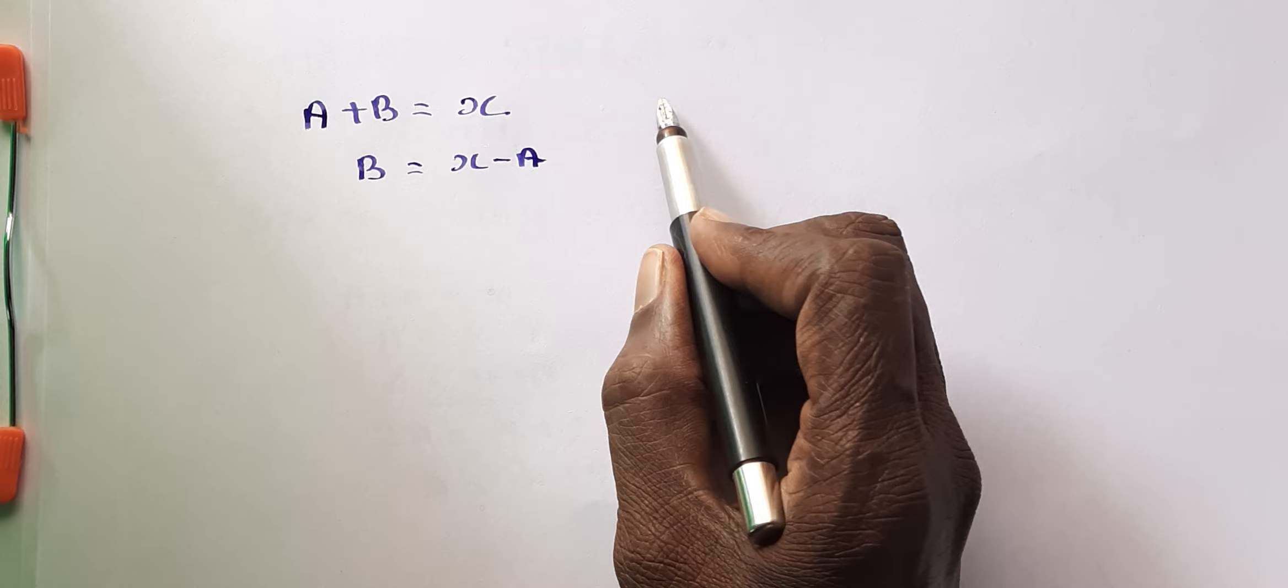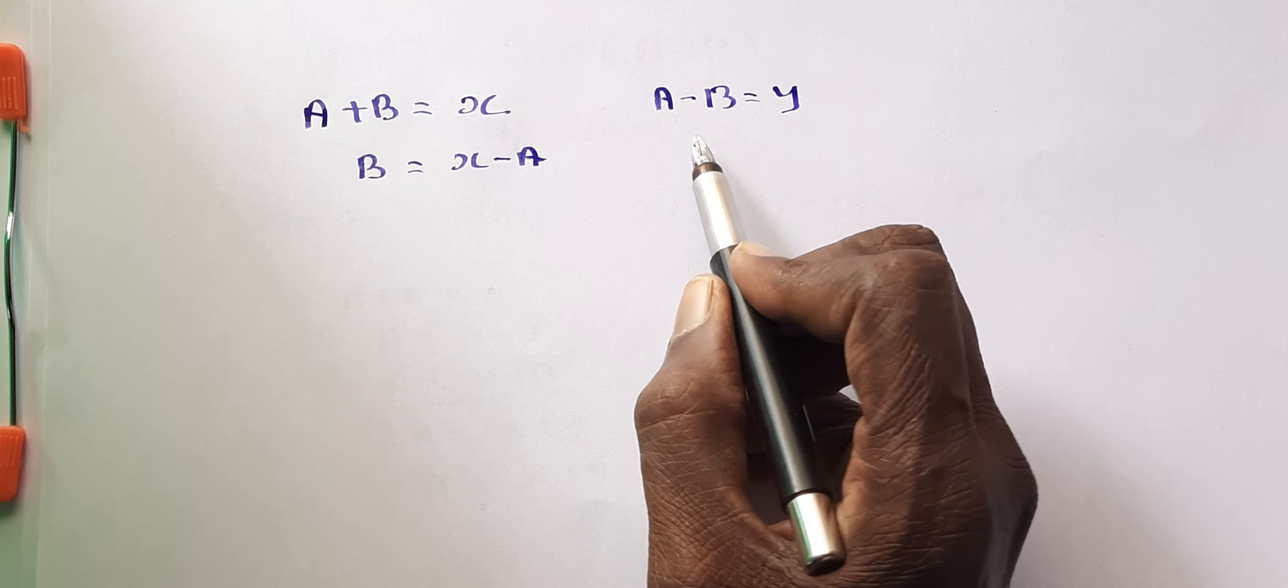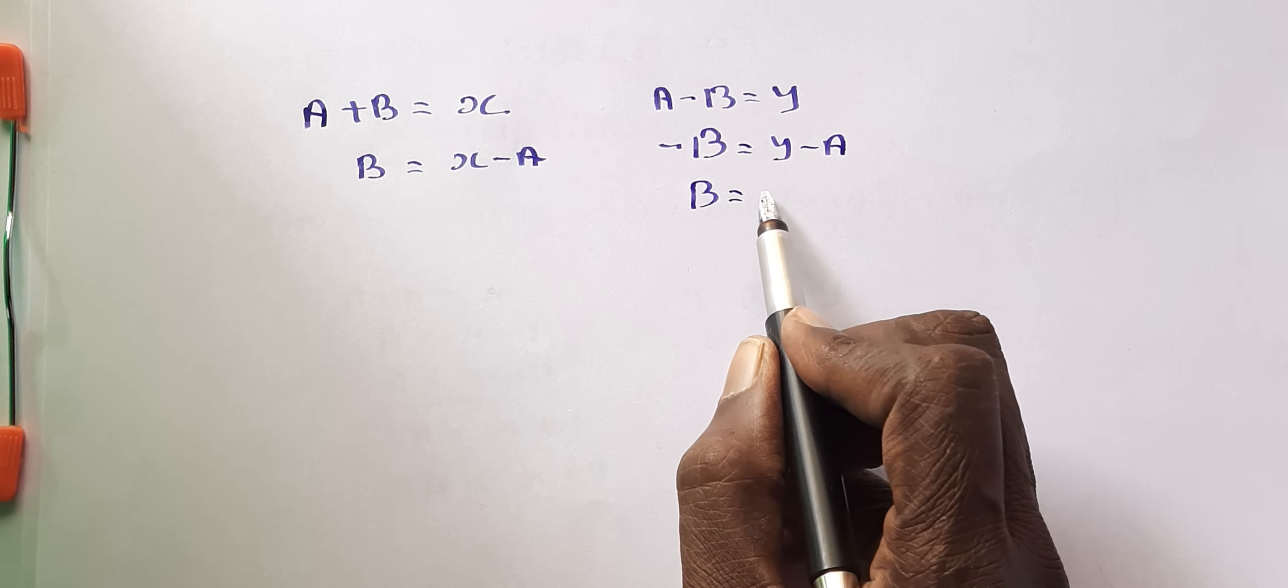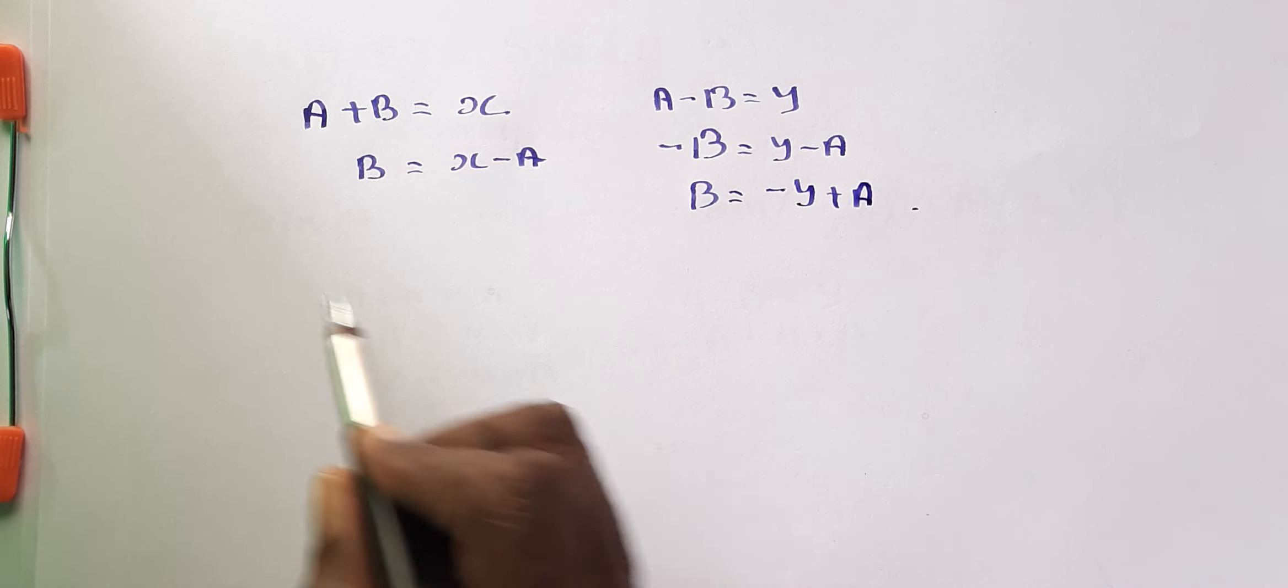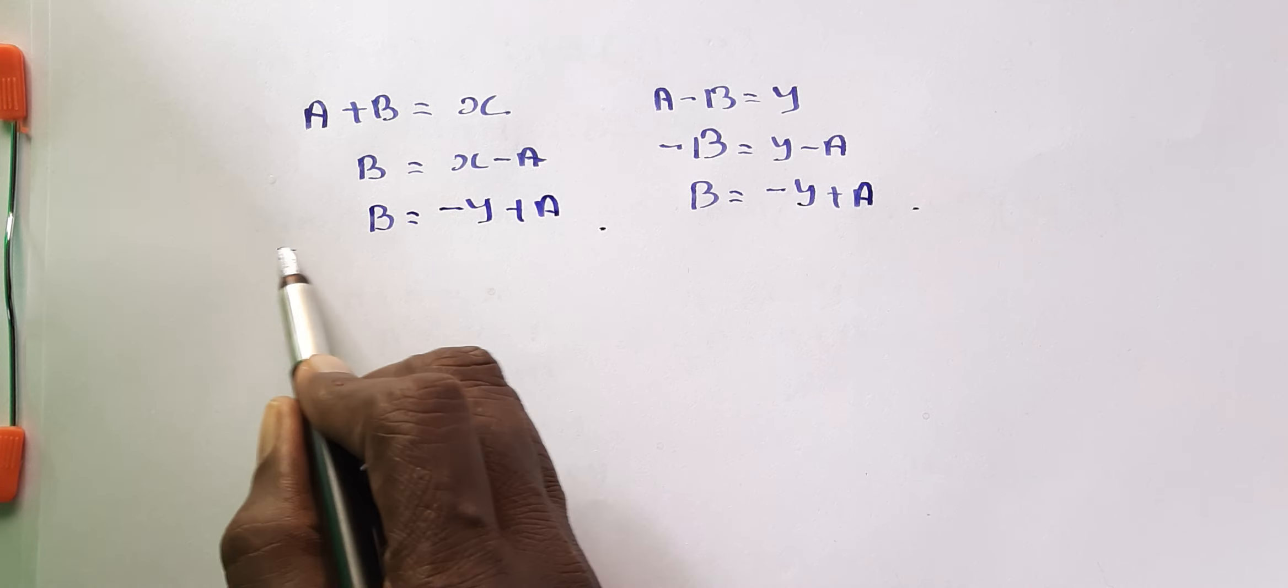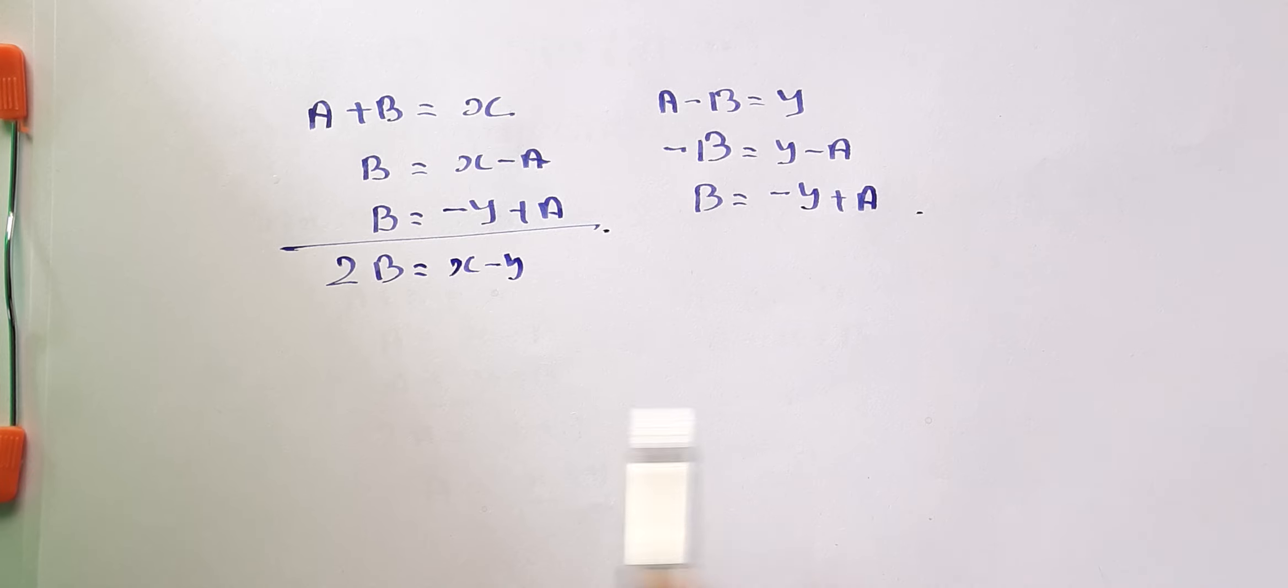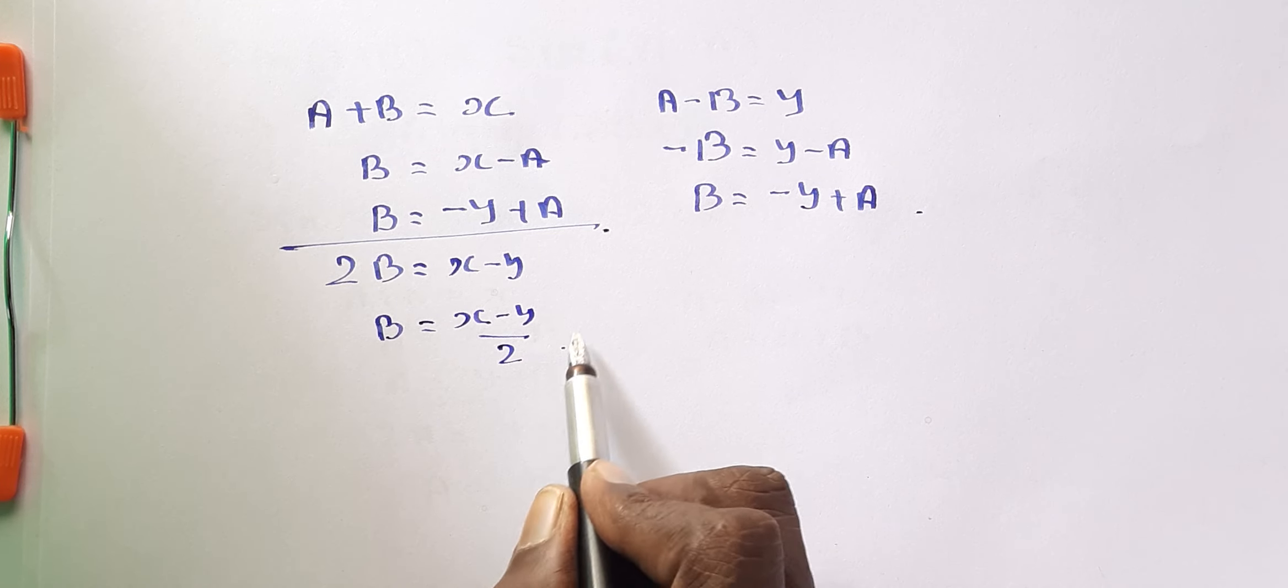Then after, A minus B is equal to Y. Minus B is equal to Y minus A. B is equal to minus Y plus A. Then B is equal to minus Y plus A. Then 2B is equal to X minus Y. That's all. Then after, B is equal to X minus Y by 2. That's all.